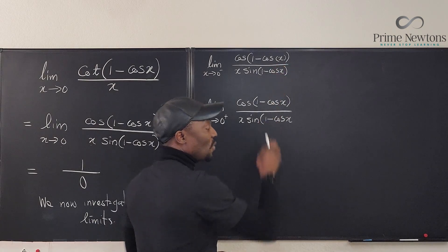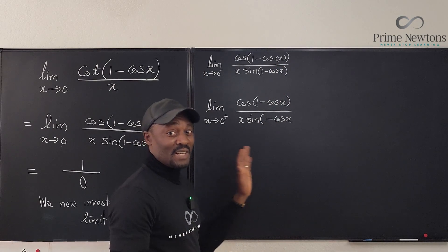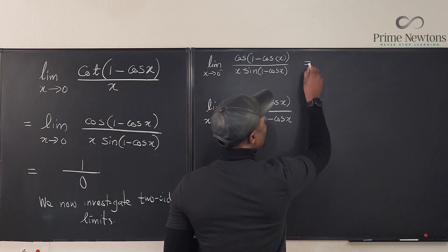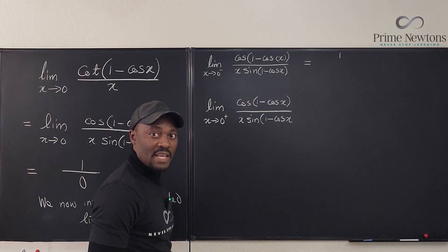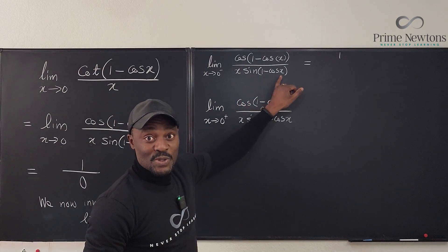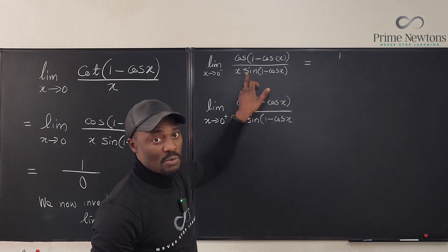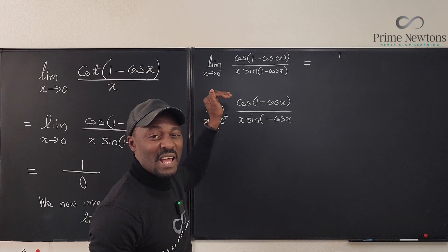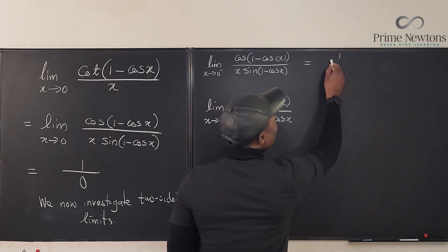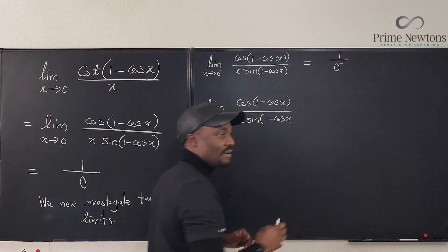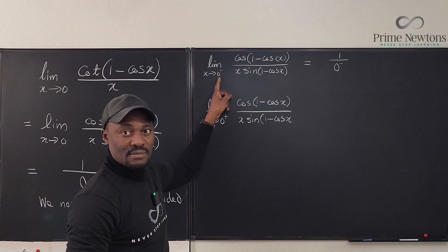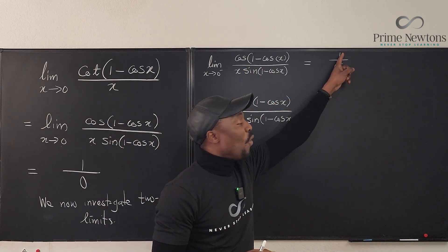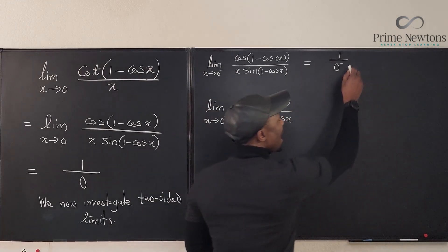Approaching from the left: the cosine value, whether from the left or right, gives the same result — you end up with one on top. Going through the same steps, the argument (one minus cosine X) approaches zero, and sine of zero is zero. But the value of X here is approaching zero from the left, so it's a negative number. So we have one over a slightly negative number, which means the left-hand limit is negative infinity.